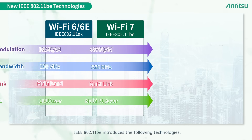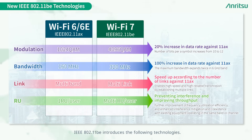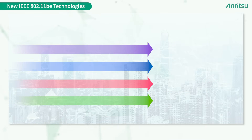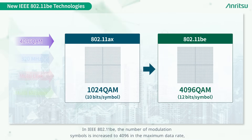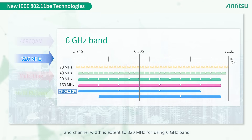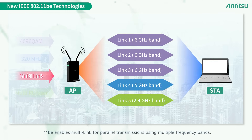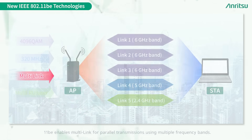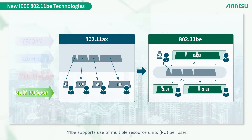IEEE 802.11be introduces the following technologies: the number of modulation symbols is increased to 4096 QAM at the maximum data rate, and channel width is extended to 320 megahertz for use in the 6 gigahertz band. 802.11be also enables multi-link for parallel transmissions using multiple frequency bands, and supports use of multiple resource units per user.